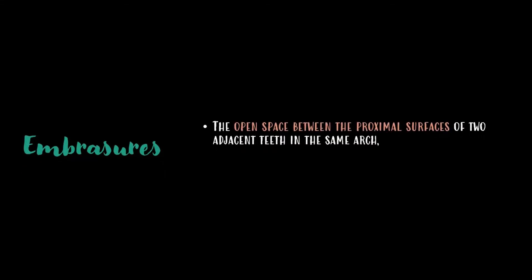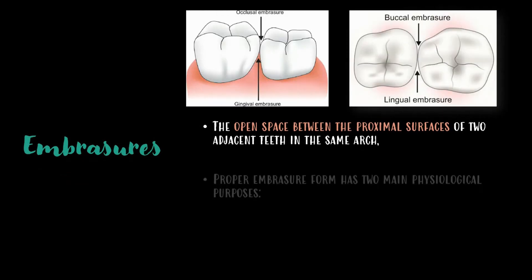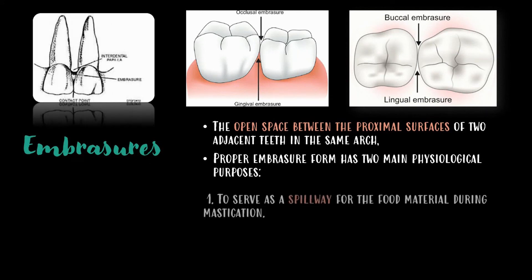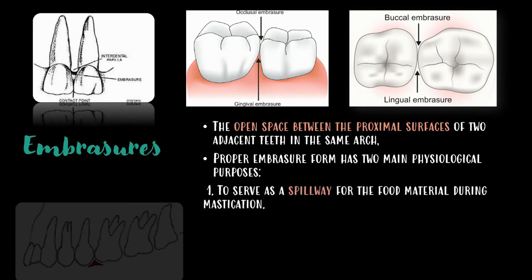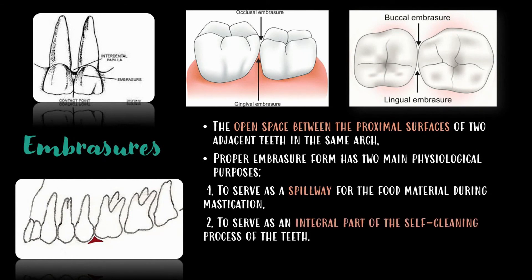The embrasure is the open space between the proximal surfaces of two adjacent teeth in the same arch. Proper embrasure form has two main physiological purposes: to serve as a spillway for food material during mastication, and to serve as an integral part of the self-cleaning process of teeth.